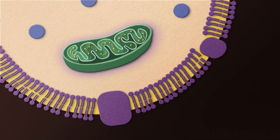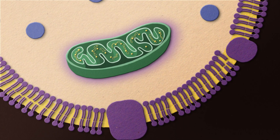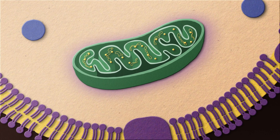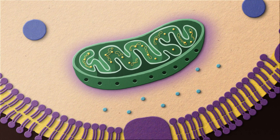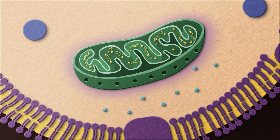The outer membrane is what separates the mitochondria from the cytoplasm and protects the inner components of the organelle. Because it interfaces with the rest of the cellular components, this membrane must have large pores that allow for the free movement of small molecules into and out of the mitochondrion.